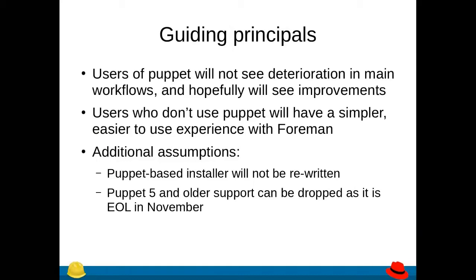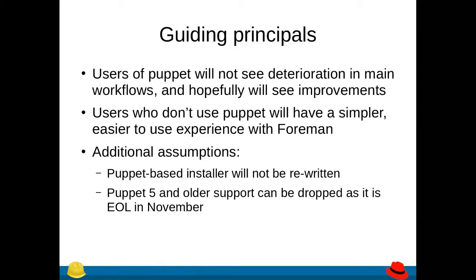There were a couple of additional assumptions we made while planning the work. One is that the Puppet-based installer will not be rewritten — that's a huge project and we don't have the capacity to do that at the moment, and it's working quite well. It doesn't actually require setting up a Puppet infrastructure for the most part, only uses a standalone Puppet. An additional assumption is that Puppet 5 and all its support can be dropped, as it's going to be end of life in November. We still have a lot of workarounds in Foreman and the Smart Proxy for things needed in Puppet 2 or Puppet 3, and a lot of that code can definitely be dropped.